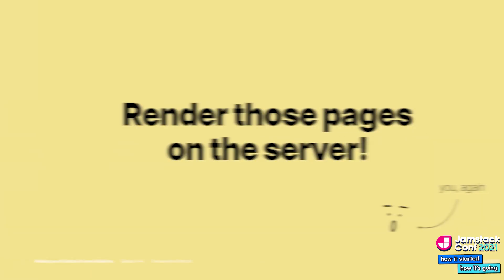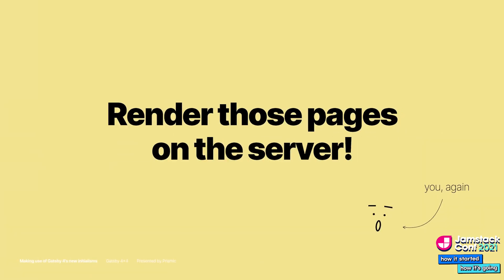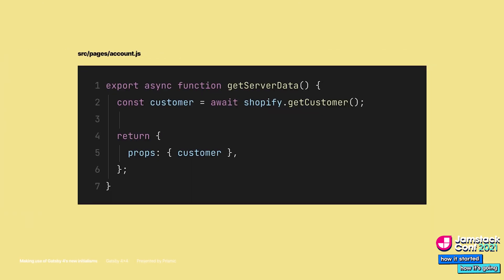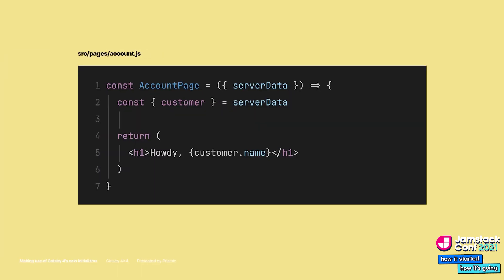Now we have a solution to that. Render those pages on the server using server-side rendering. What you need to do is move your customer API logic into getServerData, and then just use the serverData prop in your pages. You can also get rid of that custom router you've been maintaining.